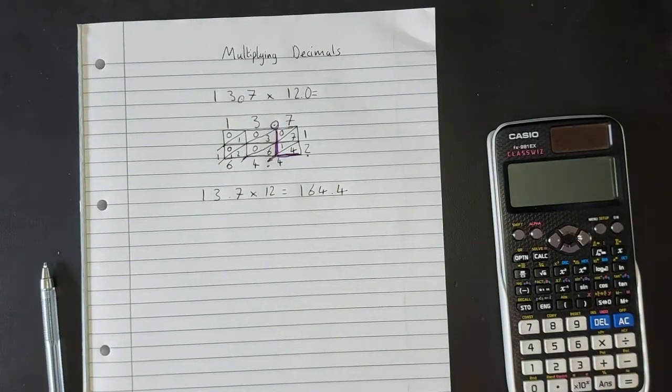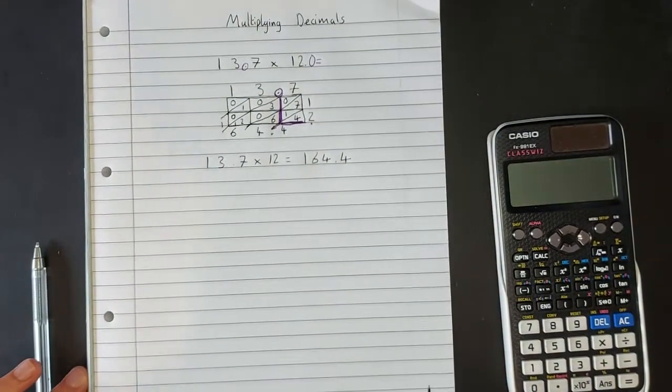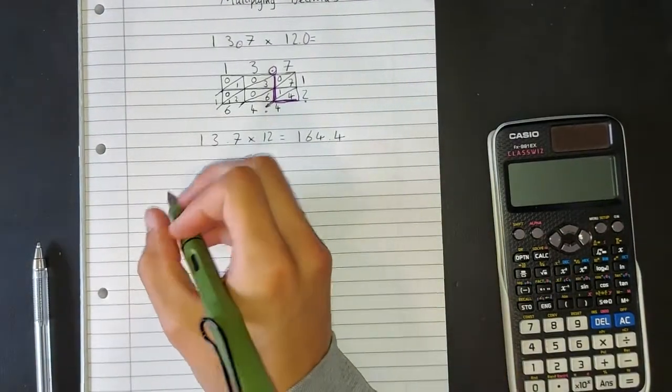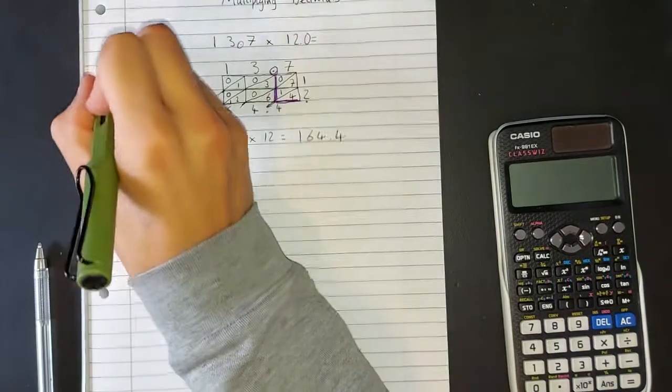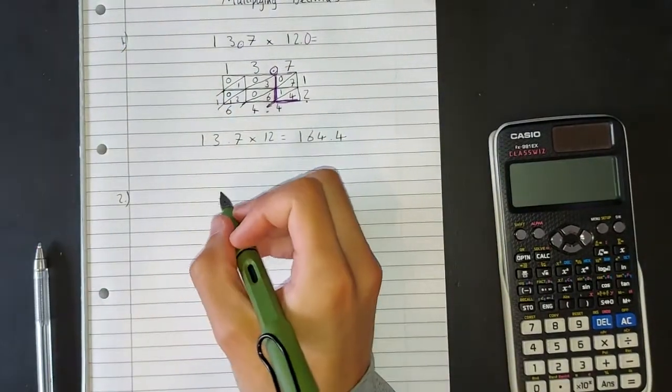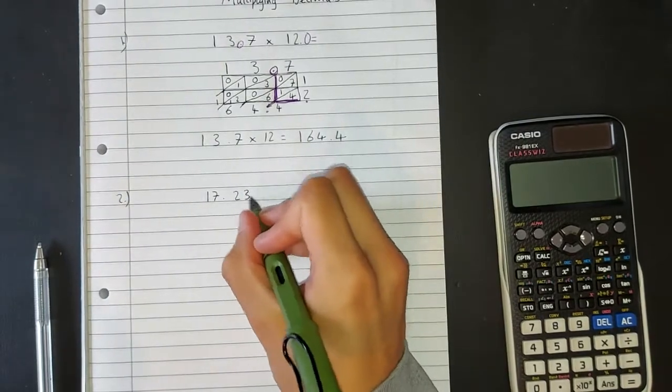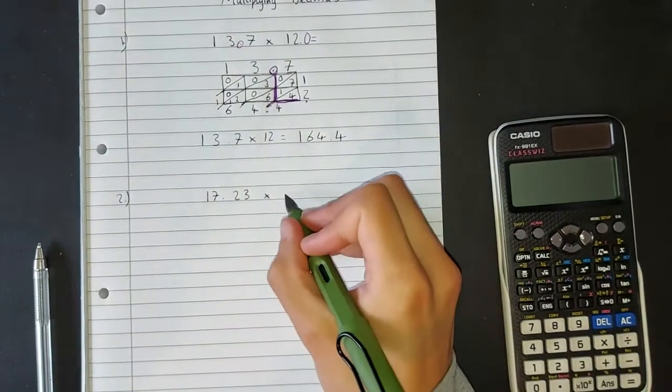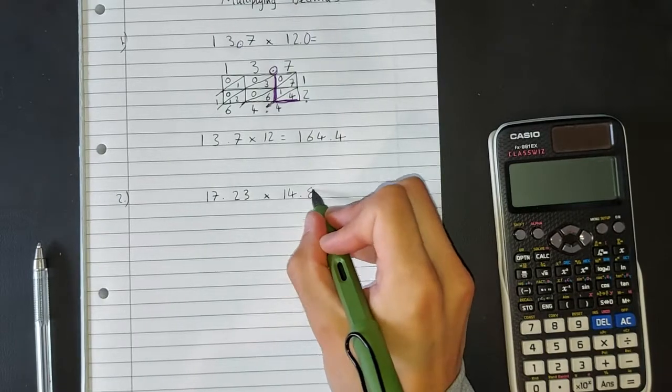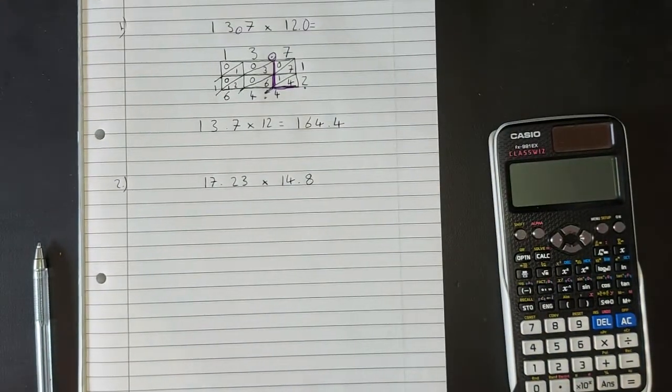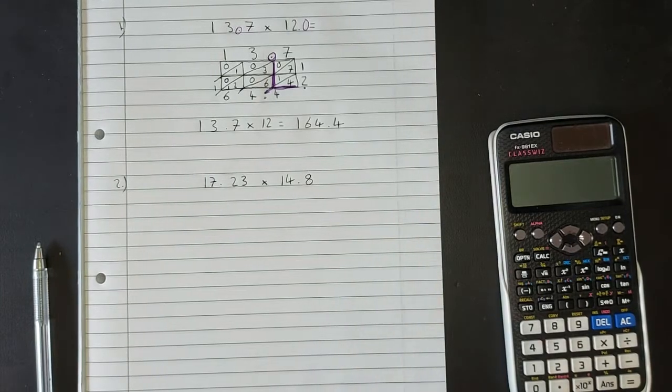Right, let's have a look at a slightly harder question. Again, if you want, you can pause it, do it your own method, and then see if we get the same answer. So this time we're going to have, let's do 2, we'll call that question 1. We're going to have 17.23 multiplied by 14.8. So 17.23 multiplied by 14.8.